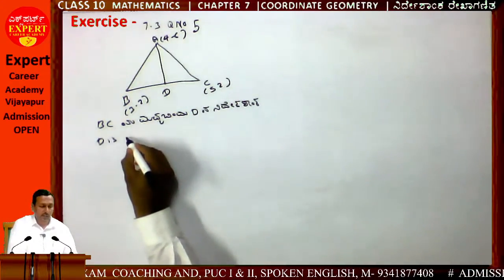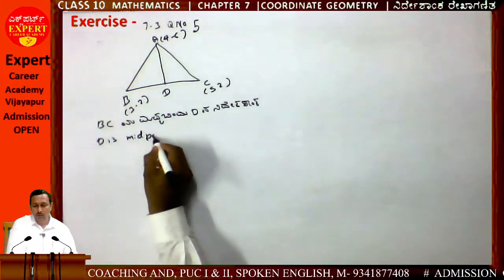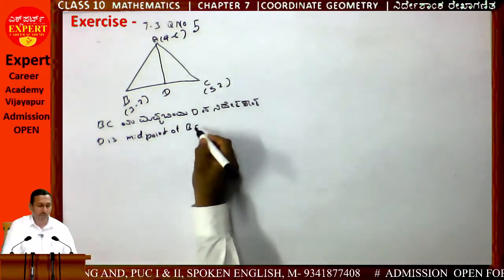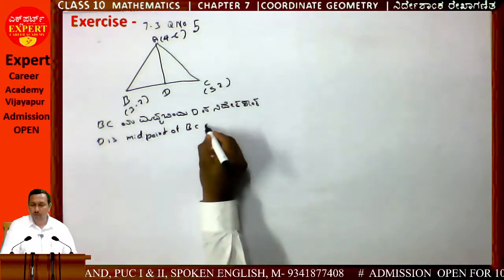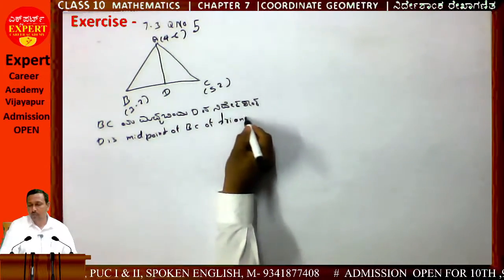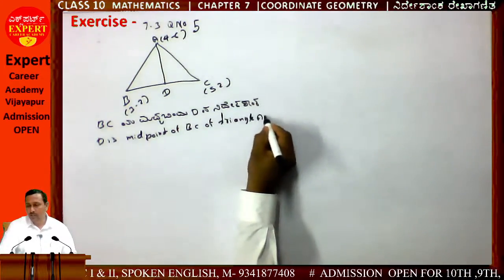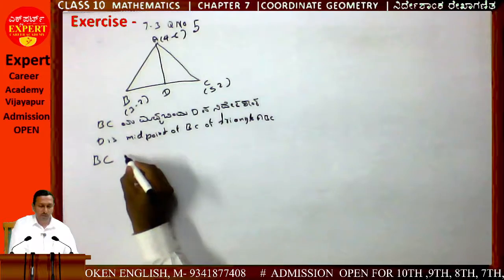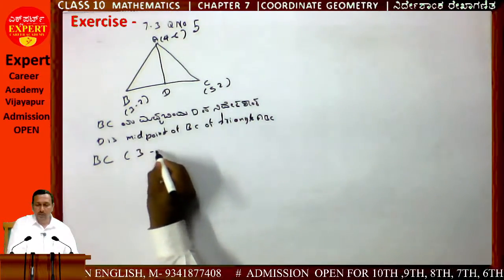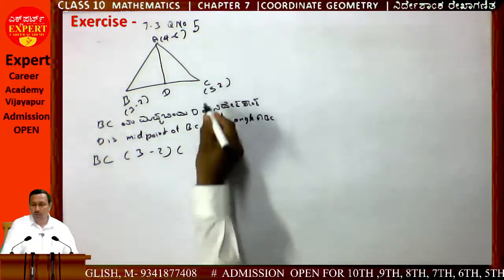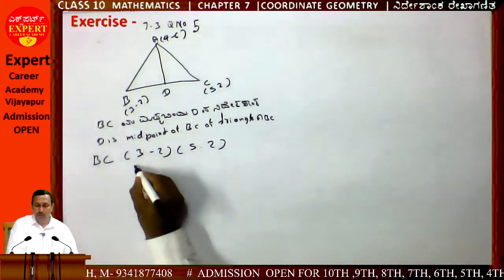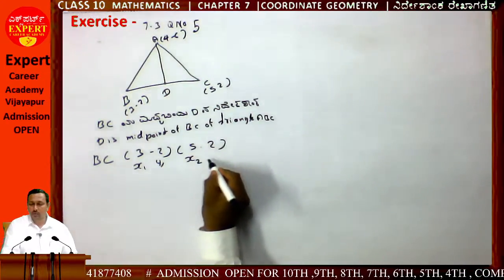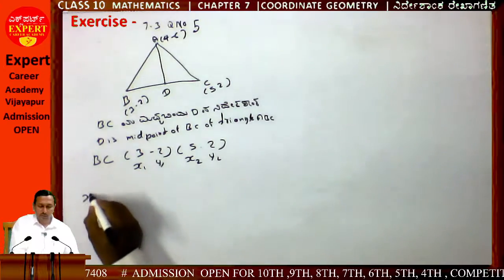D is the midpoint of BC of triangle ABC. B has value (3,-2) and C has value (5,2). Let x1, y1 be B and x2, y2 be C. Apply the midpoint formula to find coordinates (x, y) of D.